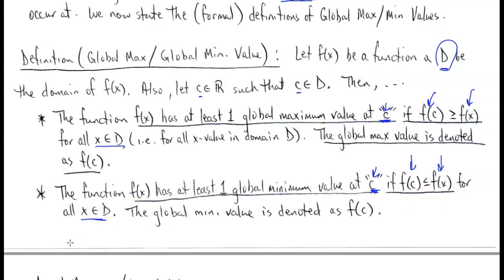Simply put: if you look within the domain of a function and identify the highest Y value, that corresponds to the global max location. If you identify the X value corresponding to the lowest Y value, that's the global min location. The global min value is the actual Y value, and the X value is the location where the global min happens.